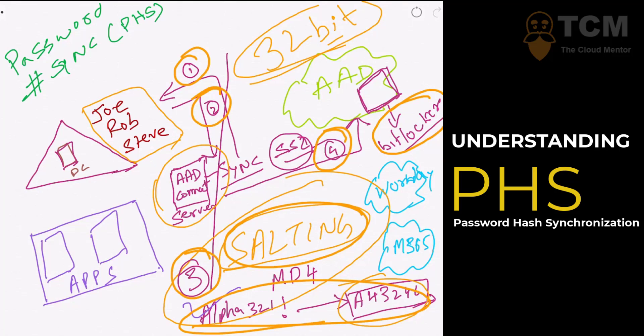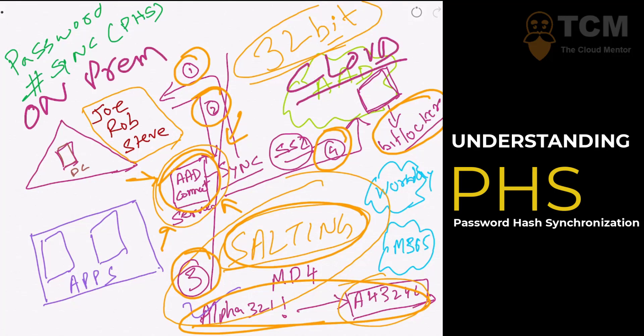As an admin, you don't need to do anything in the background steps manually. All you have to do is install and configure the Azure Active Directory Connect server. What's happening overall is the passing of hashes from one format to another, from your on-premises server all the way to the cloud-based identity mechanism — Azure Active Directory.